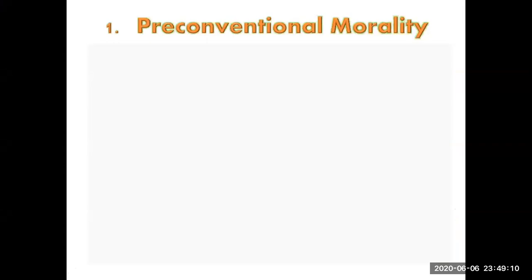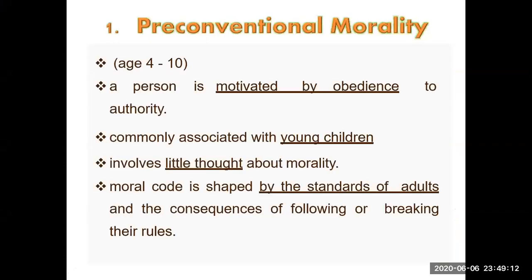The first level is pre-conventional morality, which Kohlberg associated with ages 4 to 10. According to him, a person is motivated by obedience to authority at this stage. It is commonly associated with young children and involves little thought about morality. This morality grows by observing adult behavior.